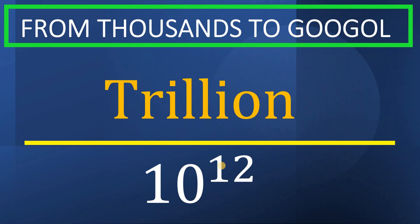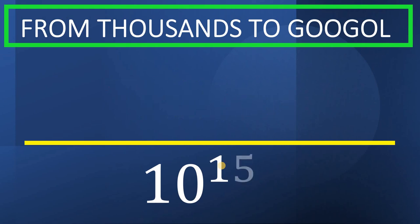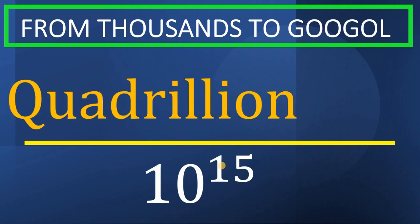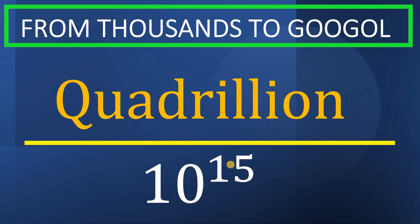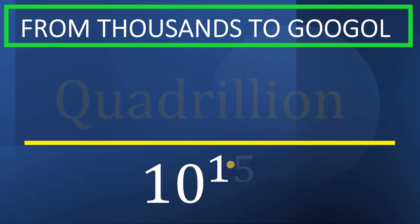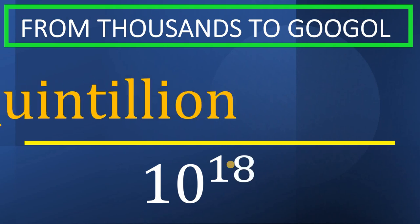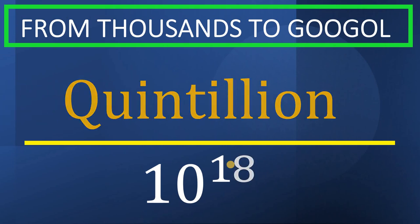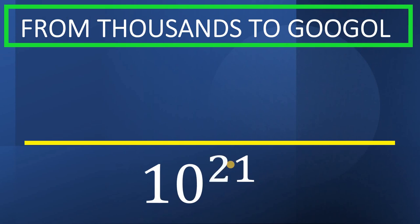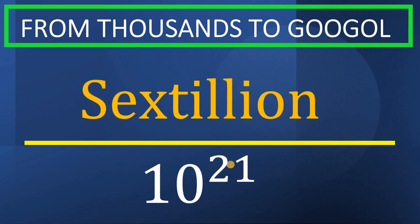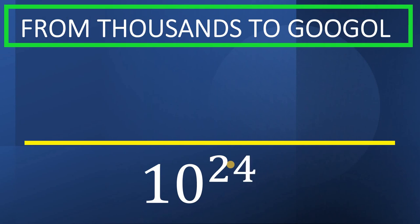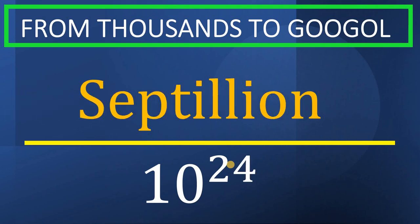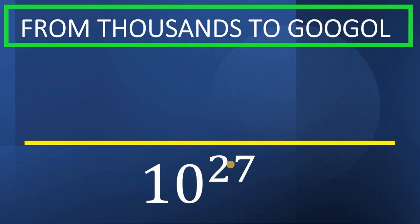And what number comes after a trillion? 10 raised to 15 is called quadrillion. Next, 10 raised to 18, this is called quintillion. 10 raised to 21, this is called sextillion. 10 raised to 24, this is called septillion.